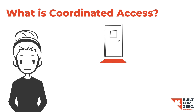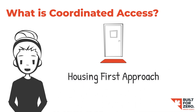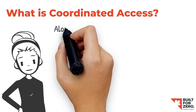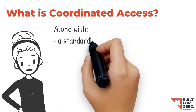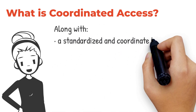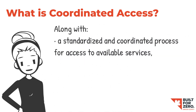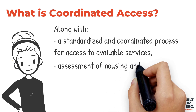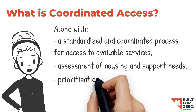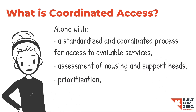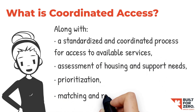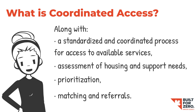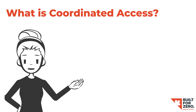A strong coordinated access system uses a housing-first approach, along with a standardized and coordinated process for access to available services, assessment of housing and support needs, prioritization, as well as matching and referral to dedicated re-housing programs and other services in a local area.